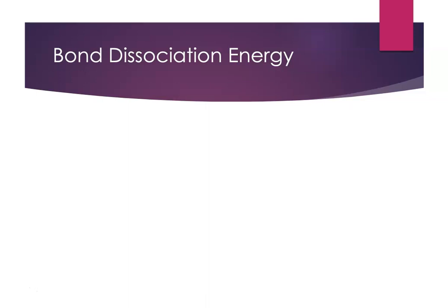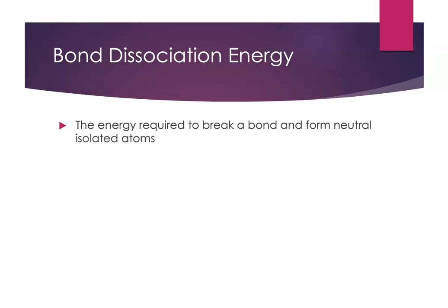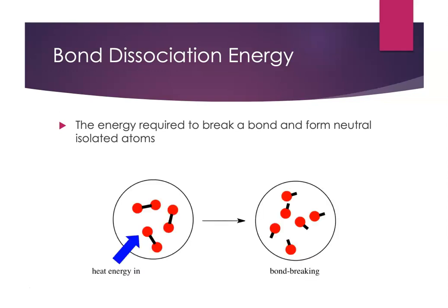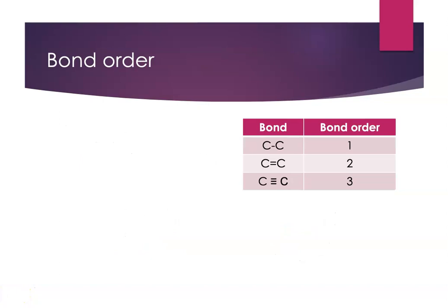If we're going to talk about bond energy we really need to define it. I like to call it bond dissociation energy — this is the energy required to break a bond and form neutral isolated atoms. You have to put energy in to break the bond, and if you put enough energy in you can break the bonds between the atoms and end up with individual atoms. It's always an endothermic process.